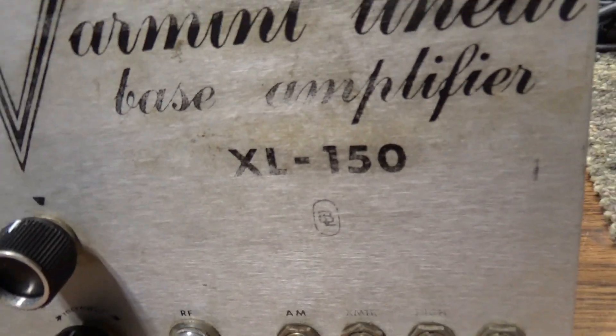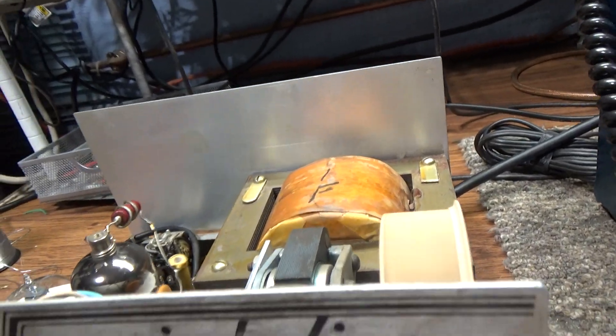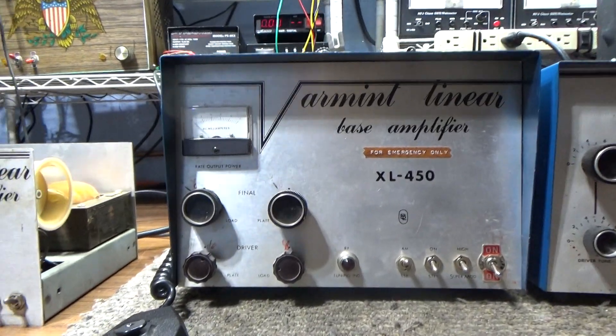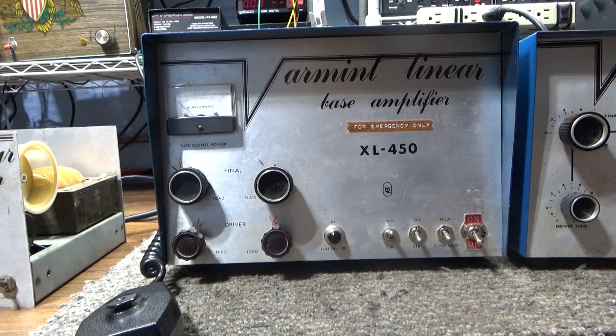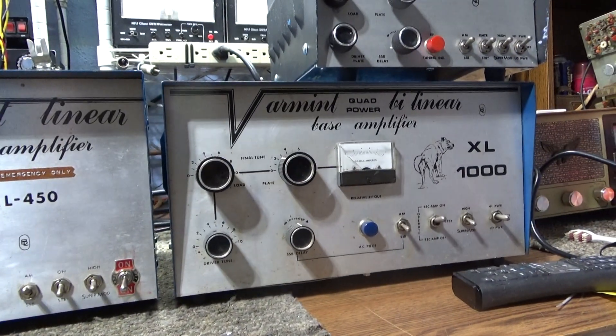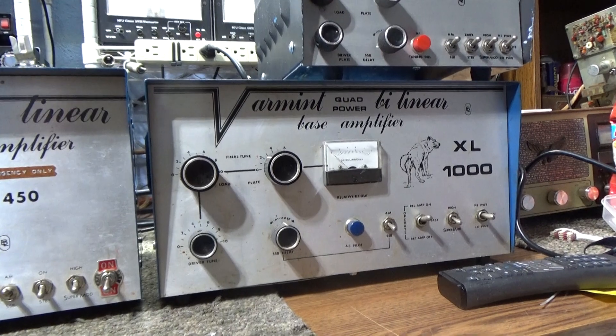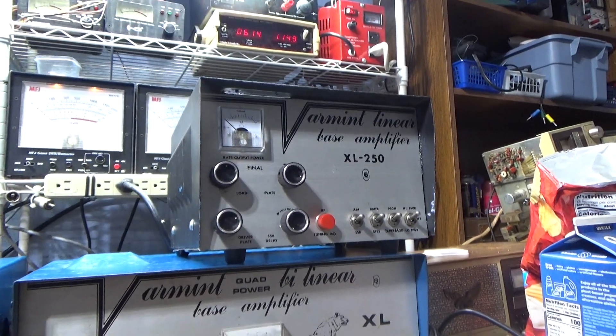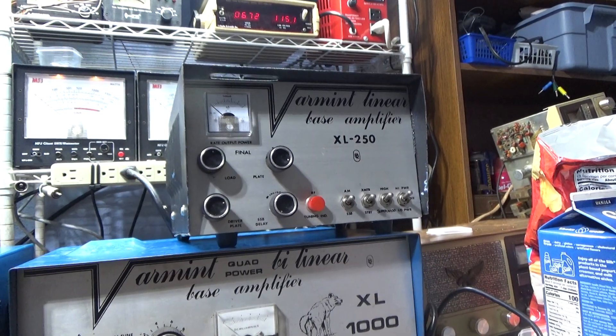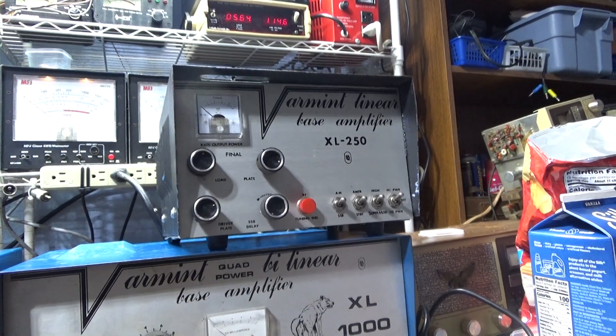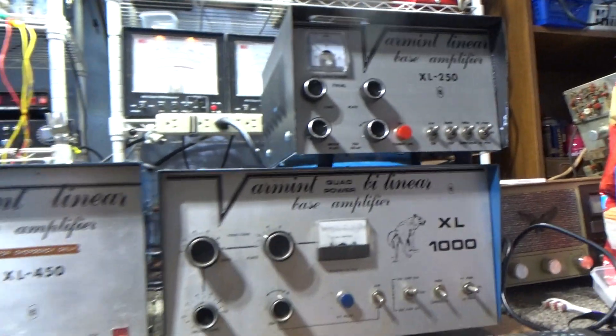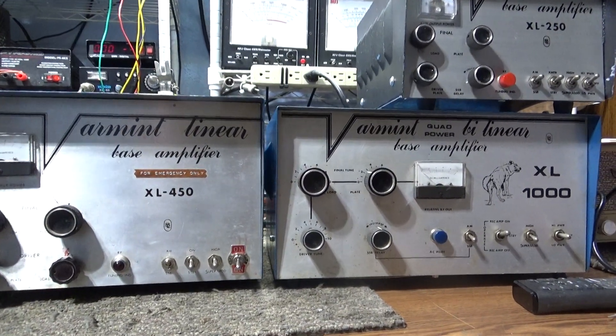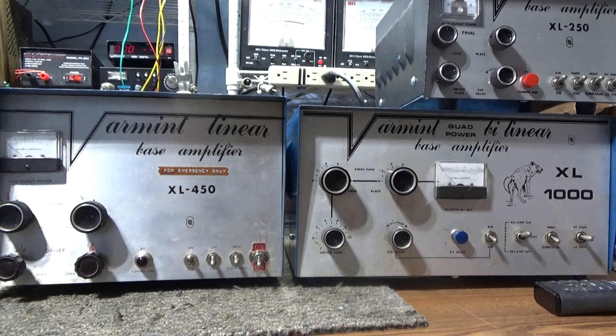That's going to be it today for this Varmint XL-150, one driving one. Coming up soon, hopefully if everything goes well, the Varmint XL-450 and the Varmint XL-1000. We already had the 250 and already did a video on that, so if you want to see what the 250 one driving two does, you can look around for it. All right, that's going to be it for my Varmint today. Bye.